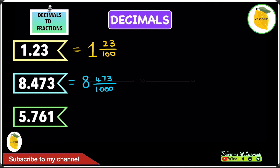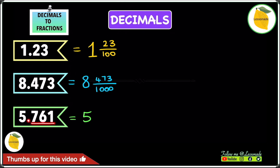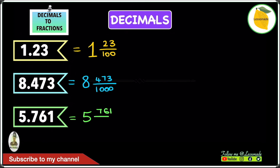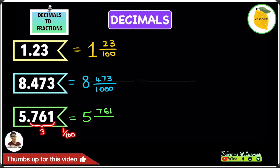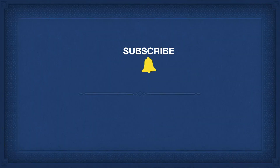And let's go to our final example, which is 5.761. The whole number is 5, so write the 5 down. The number after the decimal point, 761, is going to be the numerator. And 3 places after the decimal point is thousandths, so our denominator will also be 1,000. Therefore, our answer to this question is 5 and 761 over 1,000.